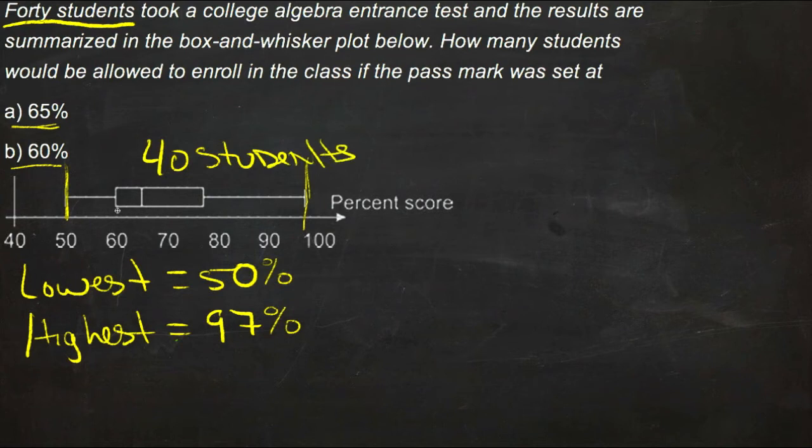Now this graph shows not only the highest and lowest scores, but also the central score, the middle score. The middle score looks like it's at 65%.